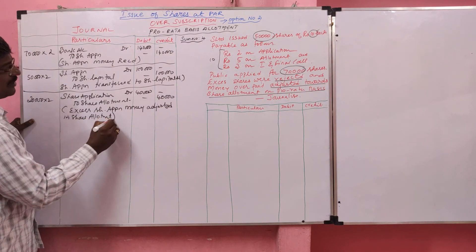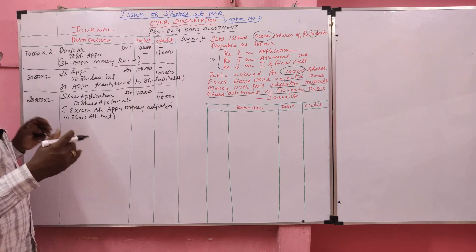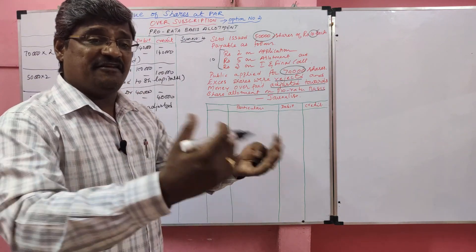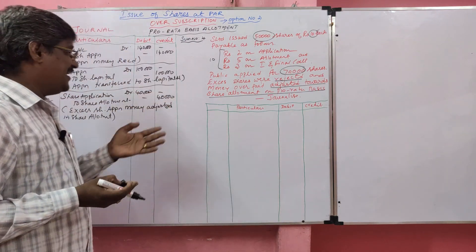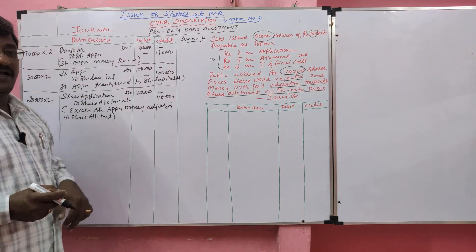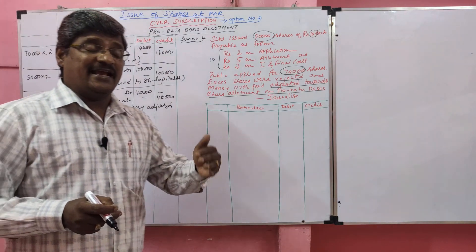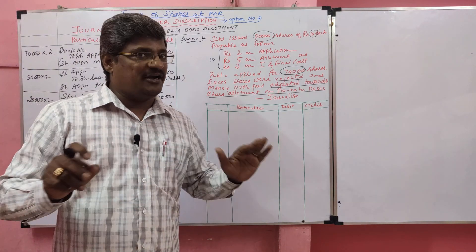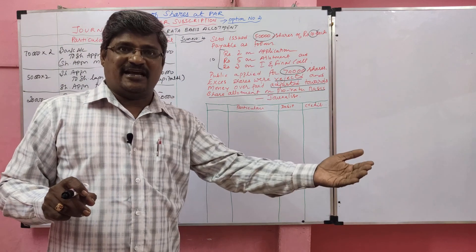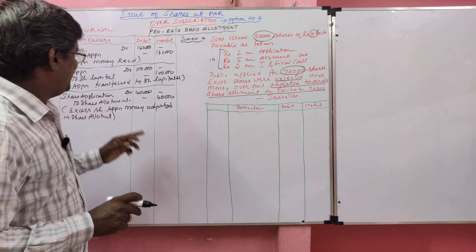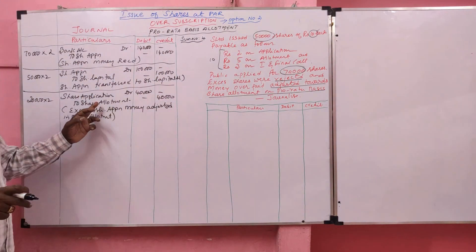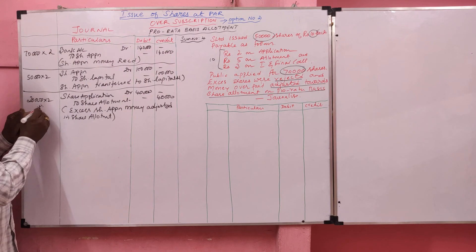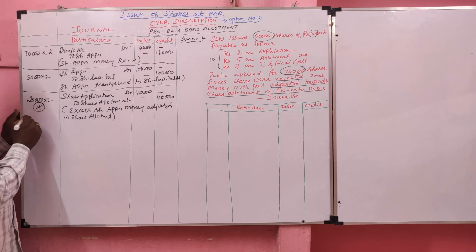In option 1, the excess shares were rejected and the money was refunded — in that case the entry is Share Application Dr to Bank. Here, the excess shares are rejected but money is not refunded; we are adjusting it in the share allotment. So the entry is Share Application Account Dr to Share Allotment. This is a new entry for pro-rata basis allotment.